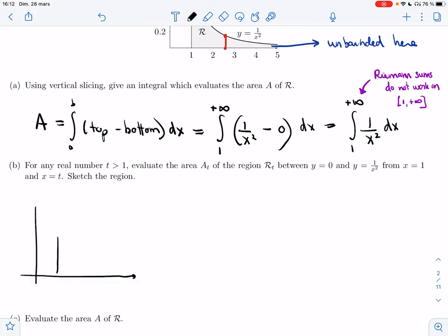Between y equals 0 and y equals 1 over x squared, so just the same as before. I have x equals 1, and then I have 1 over x squared. But instead of letting this region go on forever, which caused us trouble because I couldn't do Riemann sums, I'm going to stop it. I'm not going to stop it at a fixed value, I'm going to stop it at t. So this is the region R_t.